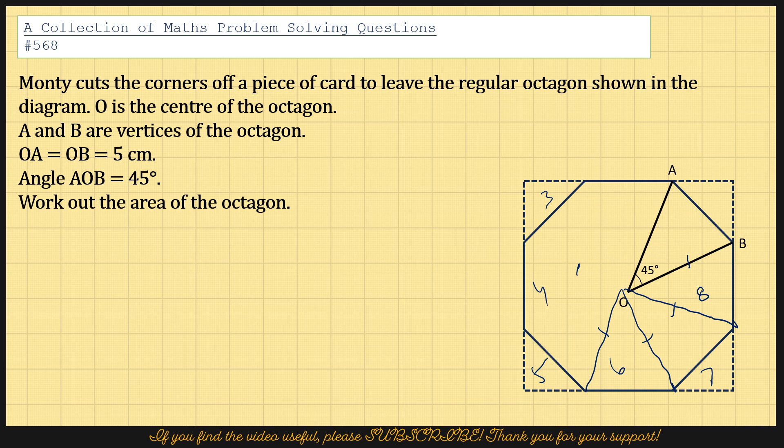So what we do to do that is very straightforward. All we have to do is draw perpendicular OX. So OX is perpendicular to AB and OX would also bisect angle AOB. So therefore angle AOX is 45 degrees divided by 2, and that's 22.5 degrees.